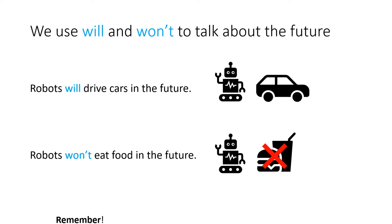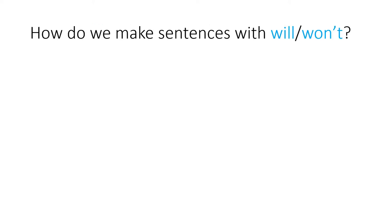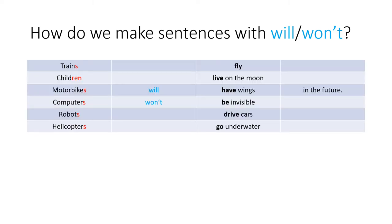And remember, won't is the same as will not. It's the negative. So how can we make a sentence with will or won't? Well, we start with the thing that we are talking about.